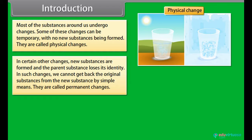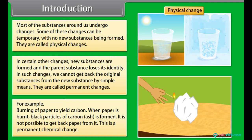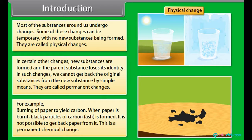They're called permanent changes. For example, burning of paper to yield carbon. When paper is burnt, black particles of carbon ash is formed. Now it is not possible to get back paper from it. This is a permanent chemical change.